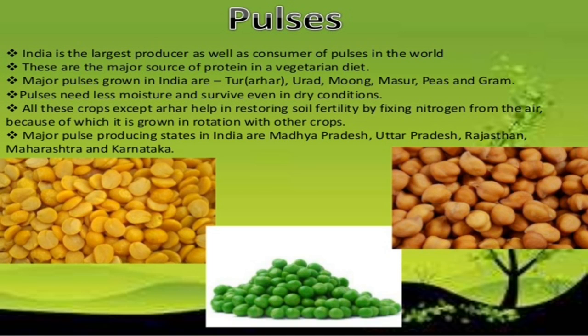India is the largest producer as well as consumer of pulses in the world. These are the major source of protein in a vegetarian diet. Major pulses grown in India are Tur (Arhar), Urad, Moong, Masoor, Peas and Gram. Pulses need less moisture and survive even in dry conditions. All these crops except Arhar help in restoring soil fertility by fixing nitrogen from the air, because of which they are grown in rotation with other crops.